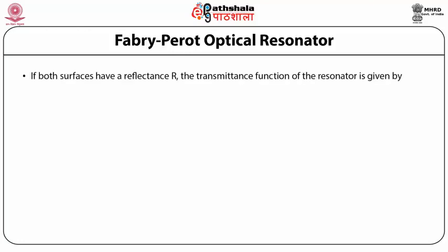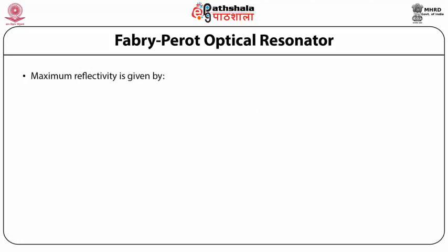If both surfaces have reflectance r, the transmittance function of the resonator is given by T = (1 − r²) / (1 + r² − 2r cos δ) = 1 / (1 + Q_r sin²(δ/2)), where the quality factor Q_r = 4r / (1 − r)². Maximum reflectivity is given by R_max = 1 − 1/(1 + Q_r) = 4r / (1 + r)².